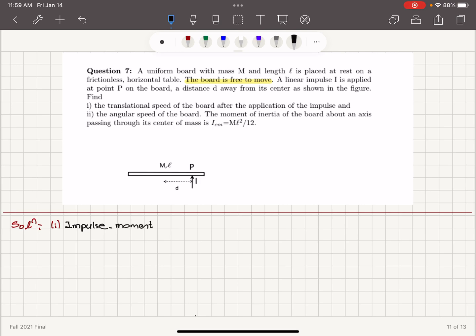What is the impulse momentum theorem? The impulse that we apply is equal to the change in the linear momentum. We have it initially at rest, placed at rest, and therefore we have no initial linear momentum. Final linear momentum will be capital M times the translational speed of the center of mass minus 0. This is equal to our impulse.